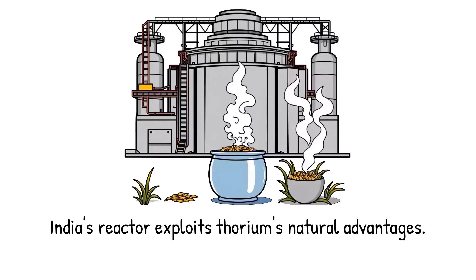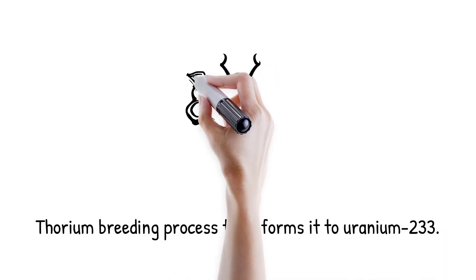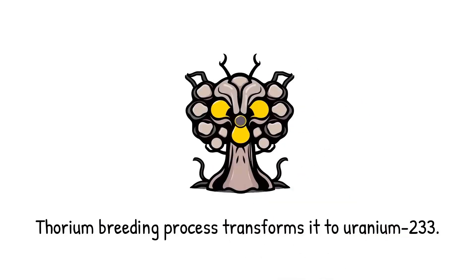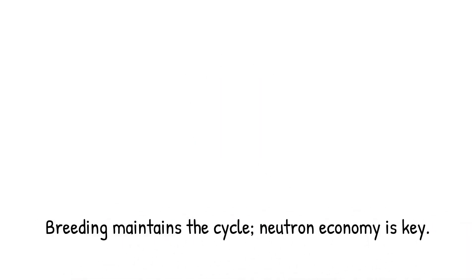Analogy: Thorium is like uncooked rice. It must first be boiled, converted, before it becomes nourishing fuel for energy. When thorium-232 absorbs a neutron, it becomes thorium-233, which undergoes beta decay to form protactinium-233. Protactinium-233 then decays into uranium-233, which is fissile and capable of sustaining nuclear fission. This transformation process is called breeding as fertile thorium is bred into fissile uranium. Neutron economy in a reactor must be carefully balanced to maintain this cycle effectively.